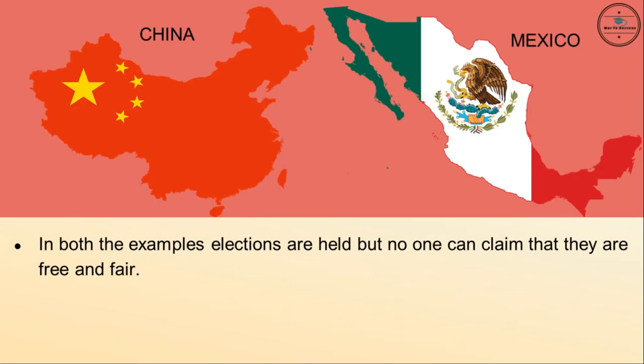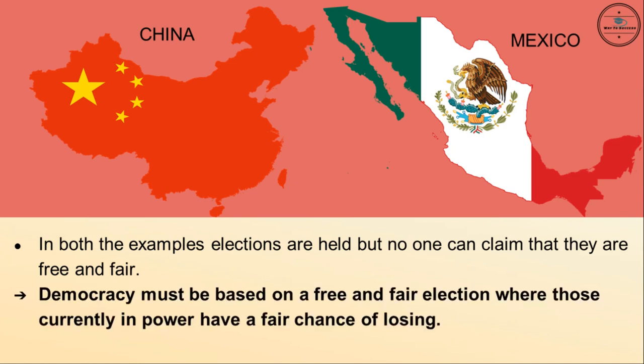In both China and Mexico, elections are held, but no one can claim that they are free and fair. We can thus add a second feature of democracy: democracy must be based on a free and fair election where those currently in power have a fair chance of losing.